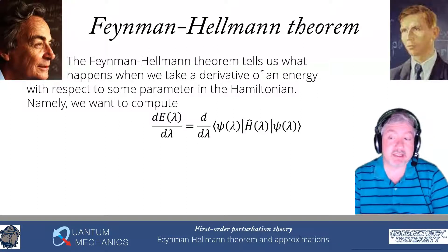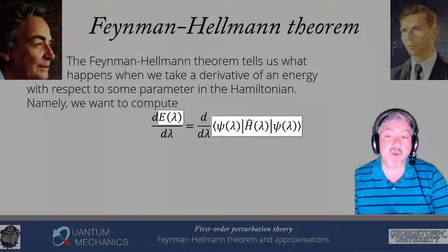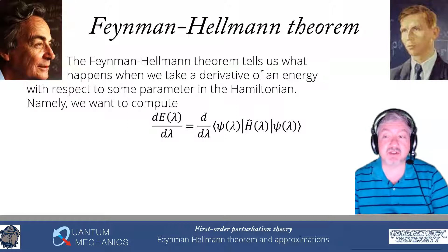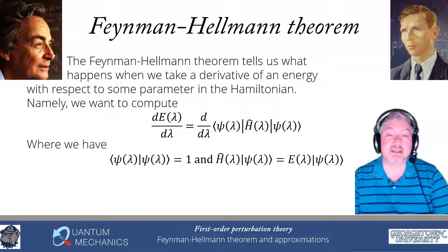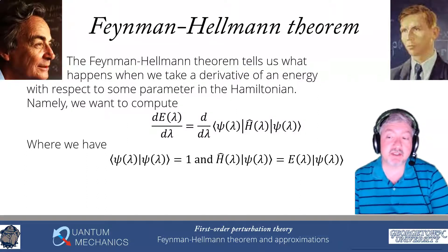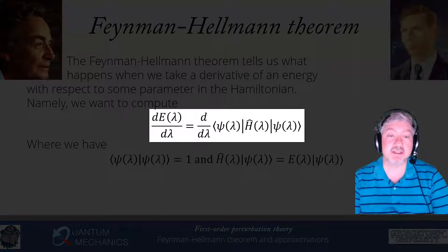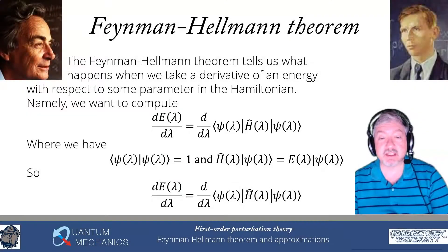To derive this, we calculate the derivative. Recall that the energy E(lambda) equals the expectation value of psi(lambda) H-hat(lambda) psi(lambda), when psi(lambda) is an eigenfunction of H(lambda). As long as H(lambda) acting on psi(lambda) equals E(lambda) times psi(lambda), and psi(lambda) is normalized, then E(lambda) equals the bracket psi(lambda), H(lambda), psi(lambda). Taking the derivative of both sides, we get dE(lambda)/d(lambda) equals the derivative of that whole expression on the right-hand side, using the chain rule.